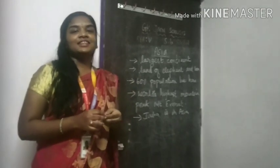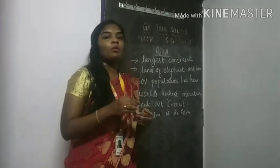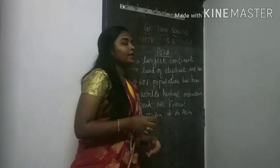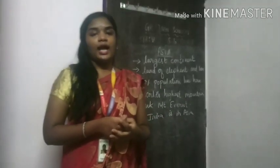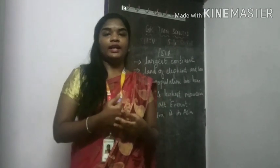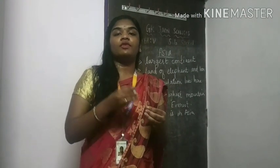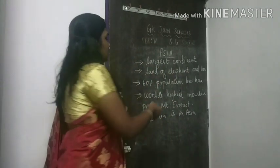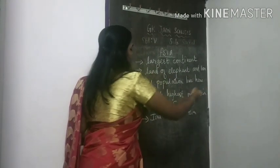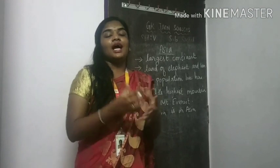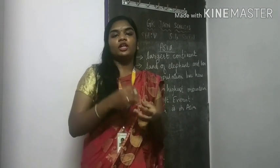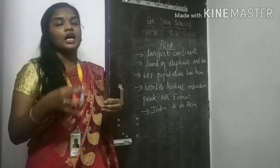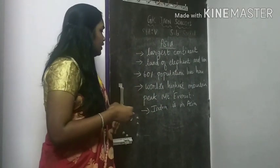Asia is the largest continent among all the 7 continents. It is considered as a land of elephants and lions, as a large number of elephants and lions are present in the Asian continent. 60% of the world's population lives here, as it is the largest continent.